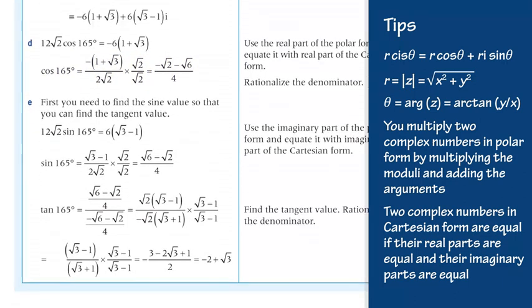Part e. In order to find the tangent value, first you need to find the sine value. To find the sine value, equate the imaginary parts of the complex numbers: 12√2·sin(165°) = 6(√3 − 1). Express sin(165°) as the subject and rationalize the denominator: sin(165°) = (√3 − 1)/(2√2) × (√2/√2) = (√6 − √2)/4.